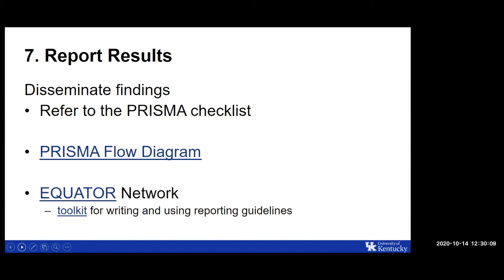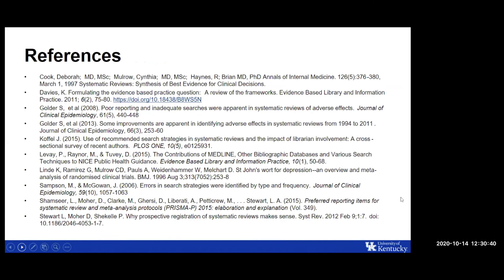The final step is reporting the results. The PRISMA checklist can be used to craft a systematic review manuscript meeting minimum reporting standards. Fill in your PRISMA flow diagrams. The EQUATOR network — Enhancing the Quality and Transparency Of health Research — has an online toolkit for writing and using reporting guidelines. We'll now pause for questions before Lauren takes over for the PubMed search demonstration.